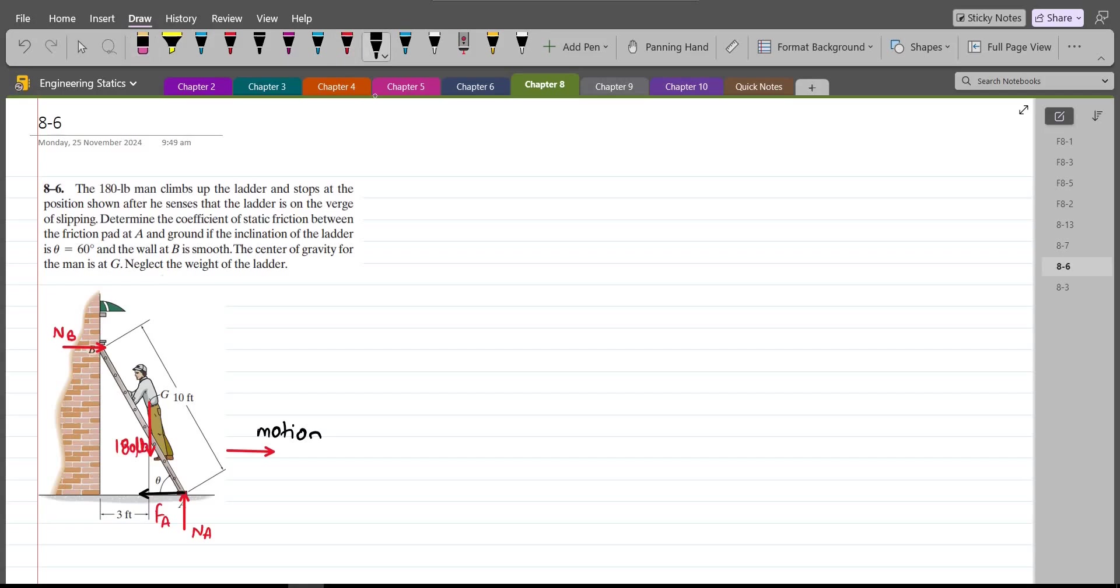Now to begin our solution, we have to consider a condition that is since the ladder is on the verge of slipping, then the frictional force FA is equal to mu S times NA, which is the maximum value of the static friction, also called the limiting friction. So we have to consider this condition.